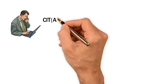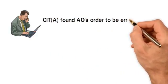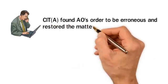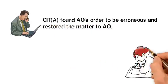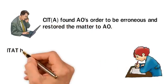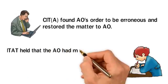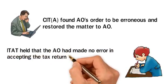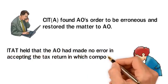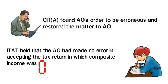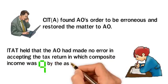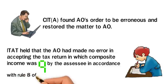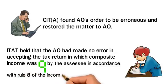CIT found the AO's order to be erroneous and restored the matter to the AO. On appeal, the ITAT held that the AO had made no error in accepting the tax return in which composite income was computed by the Assessee in accordance with Rule 8 of the Income Tax Rules 1962.